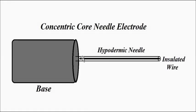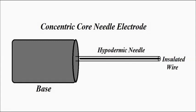Here you can see the concentric core needle electrode: this is the hypodermic needle, and inside it we have the insulated platinum wire which is exposed at the tip. This also has a lead wire for signal conduction and feeding to the signal conditioning and processing circuitry — I have just forgotten to draw it here, but it is present. The hypodermic needle in the form of a cylinder containing the insulated wire exposed at the tip is what distinguishes it from the other electrode types.